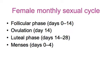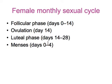The female monthly sexual cycle can be divided into several phases. The follicular phase runs from day zero — the first day of menses — up to mid-cycle, usually day 14. At day 14 ovulation occurs, followed by the luteal phase, governed by hormones from the corpus luteum, running from day 14 to 28. Menses then commence again, typically lasting from day zero to day four.